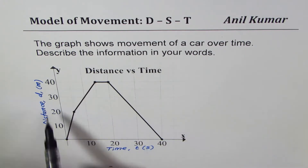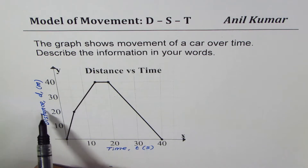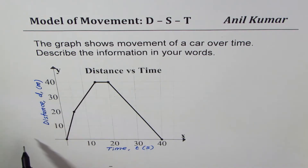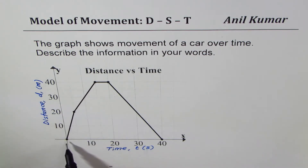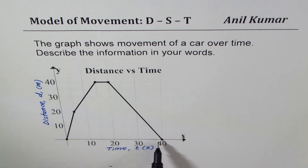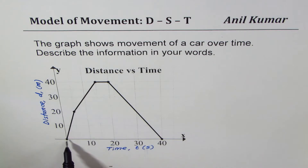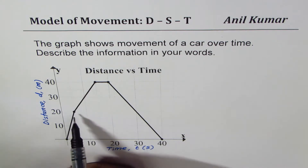On the y-axis we have distance d in meters. The solid line here indicates the movement of the car, which really means that with respect to time, what is the position of the car.